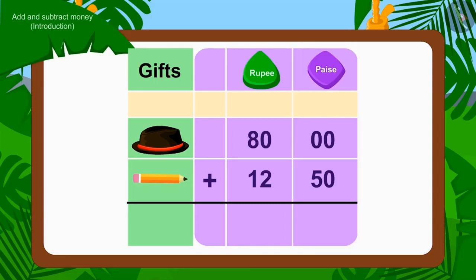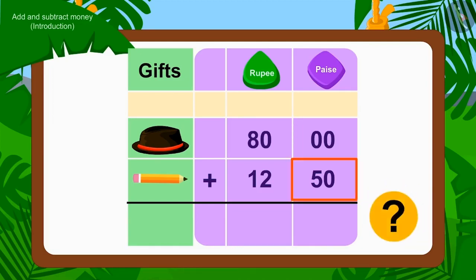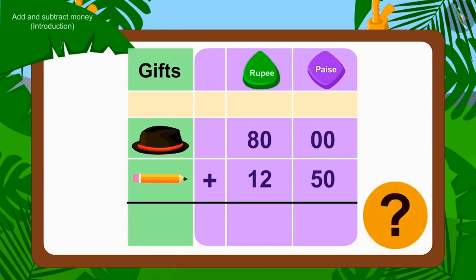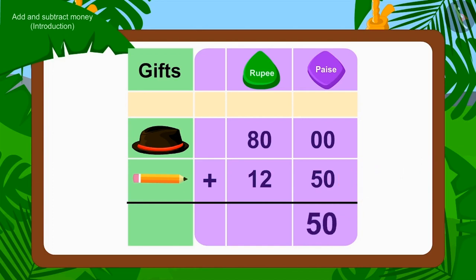First, we will add the numbers of paise. Is there an amount of paise in the cap price? No. Is there any paise in the price of a pencil? Yes! 50 paise. How much paise will there be if you add 50 paise to 0 paise? Exactly! 50 paise.